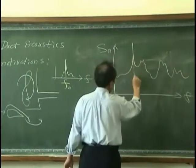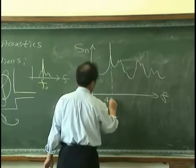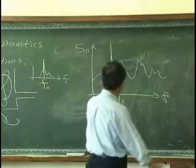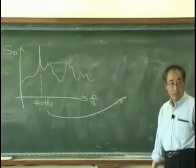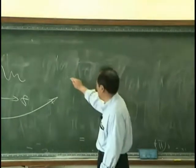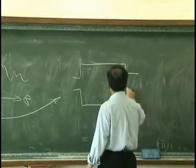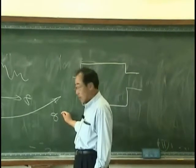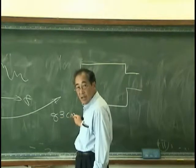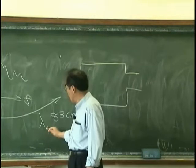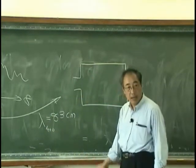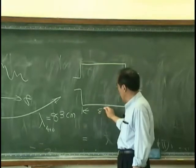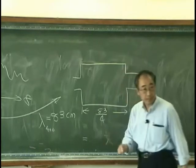It's a noise spectrum, and we know this peak is at, say, 400 hertz. To design the silencer, we can take this dominant frequency to determine the size of the expansion chamber. The corresponding wavelength is about 83 centimeters — that is lambda at 400 hertz. Therefore, I select the size of the chamber by dividing by 4.